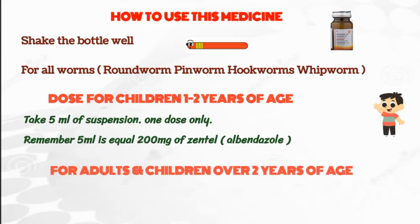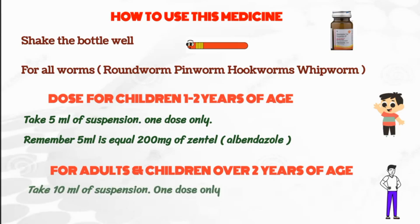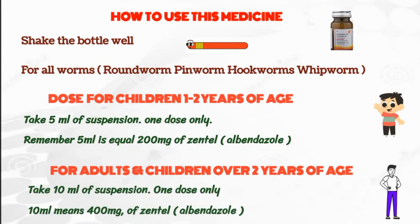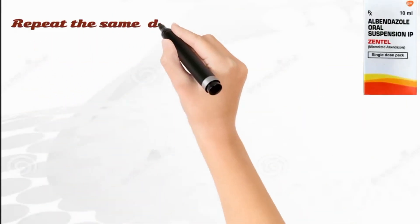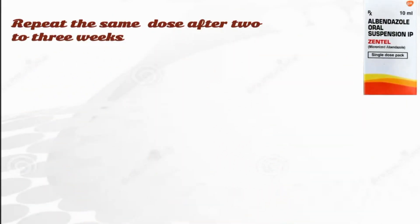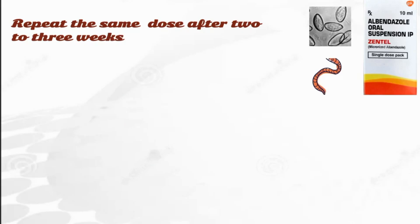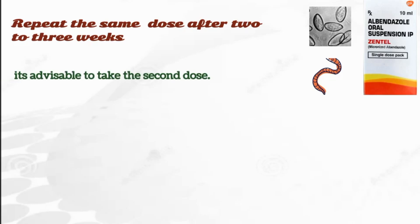For adults and children over 2 years of age, take 10 ml of suspension — one dose only. 10 ml means 400 mg of Zentel. Repeat the same dose after 2 to 3 weeks, because sometimes eggs of the worms may still be present in the intestines, so to completely eradicate them, it's advisable to take a second dose.